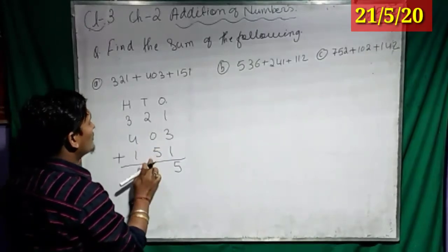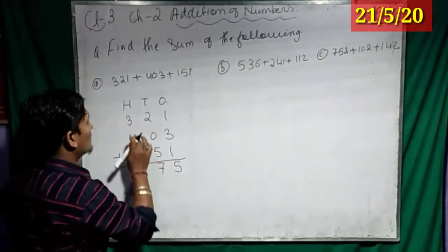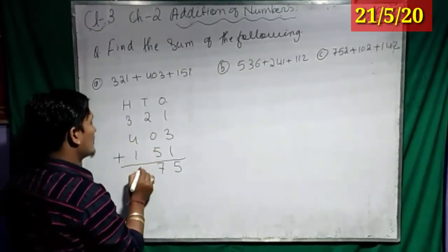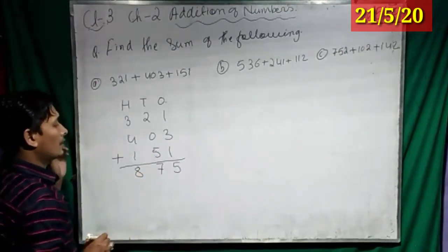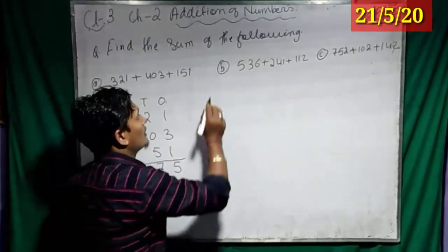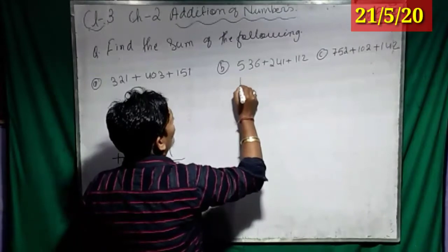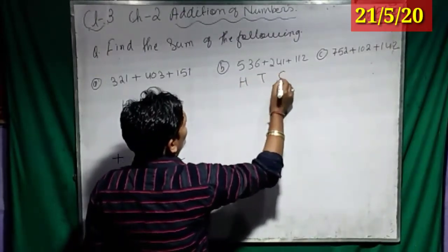Good. 7. Then, 3 plus 4 plus 1? Yes, 8. Got it? Now, number B. So, H-T-O.